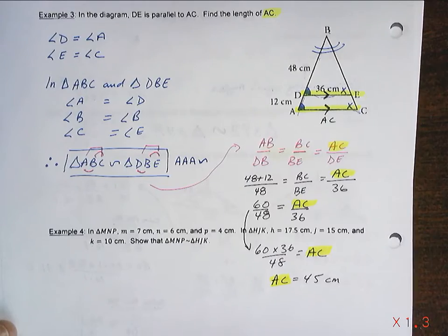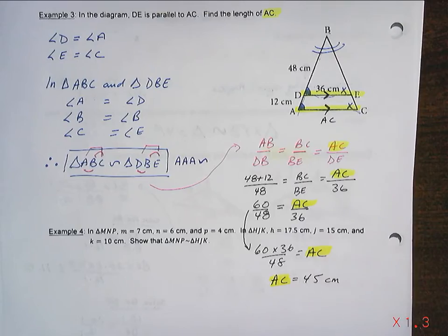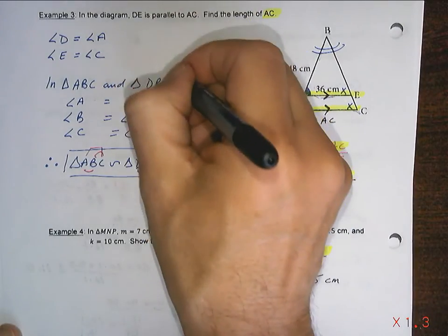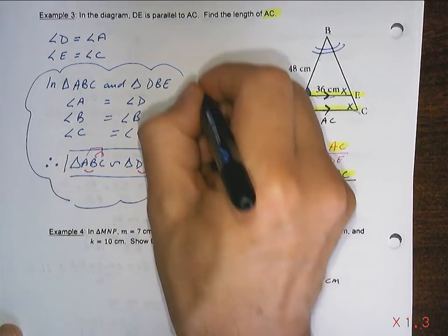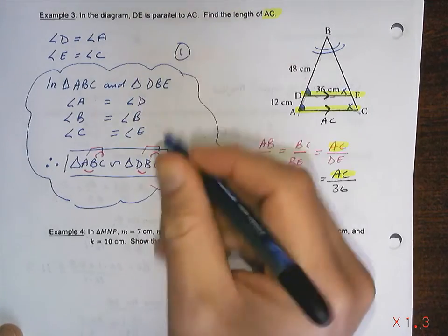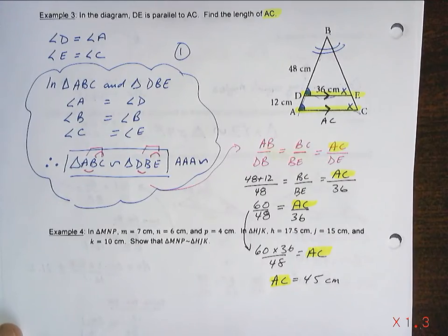And that is the entire question. Now, ladies and gentlemen, let's be very clear here. There's two parts to this question. There's part one, where you prove that the triangles are similar. You need to do that. You need to show me this work.